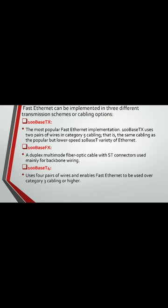Fast Ethernet can be implemented in three different transmission schemes or cabling options: 100Base-TX, 100Base-FX, and 100Base-T4. 100Base-TX, the most popular Fast Ethernet implementation, uses two pairs of wires in Category 5 cabling — the same cabling as the lower-speed 10Base-T. 100Base-FX uses a duplex multimode fiber optic cable with ST connectors, used mainly for backbone wiring. 100Base-T4 uses four pairs of wires and enables Fast Ethernet to be used over Category 3 cabling or higher.